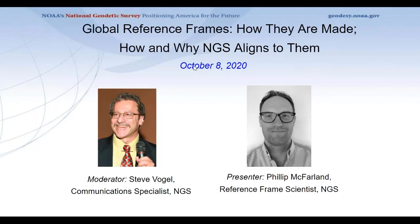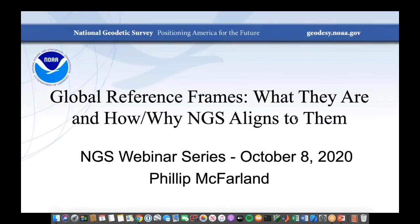We've given this presentation a technical rating of intermediate, meaning some prior knowledge of the topic is helpful. Philip is a geodesist and reference frame scientist at NGS. He received a bachelor's and a master's degree in geosciences from the University of Arizona. Philip is currently the project manager for NGS's contribution to IGS Repro 3, which is a reprocessing of all GPS orbits from 1994 to the present and is the first step to defining the GNSS contribution to the upcoming ITRF 2020 global reference frame.